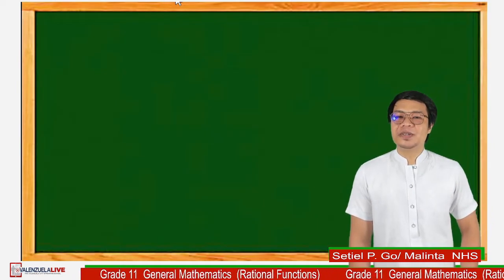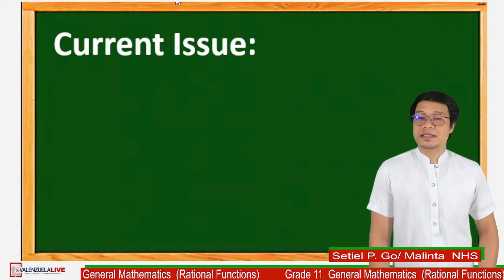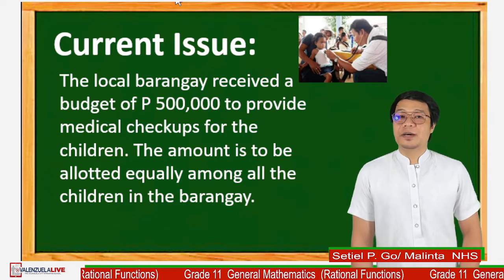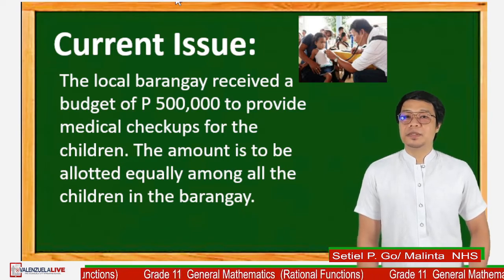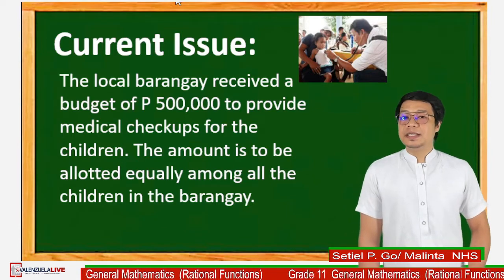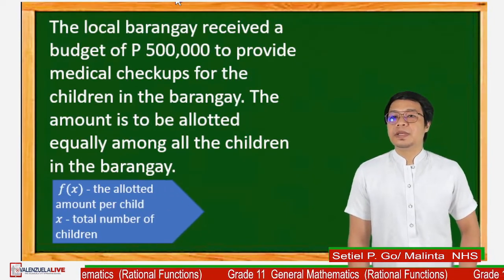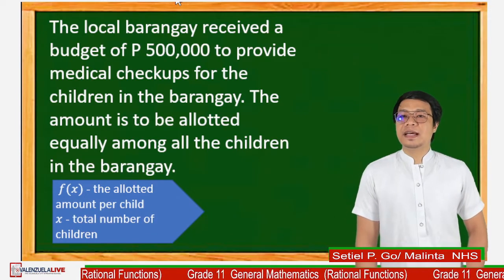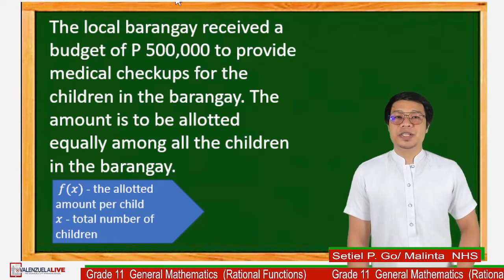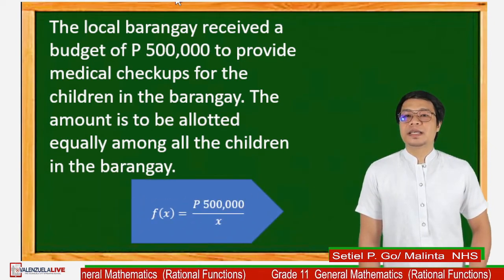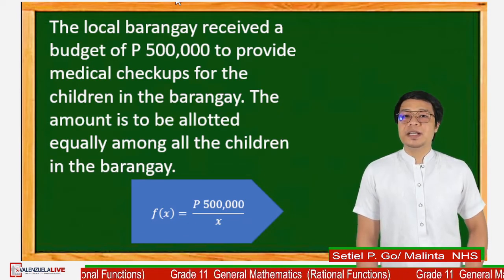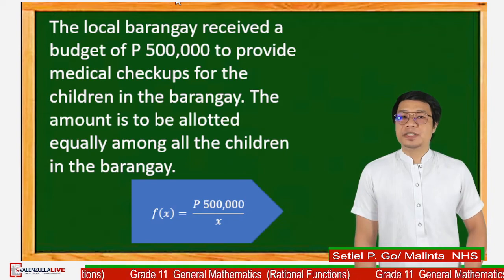We can also use the concept of rational functions in current events. Let's have this: a local barangay receives a budget of 500,000 to provide medical checkups for the children. The amount is to be allotted equally among all the children in the barangay. So we have f(x) as the allotted amount per child, and x as the total number of children. Therefore, the function will be 500,000 pesos divided by x.